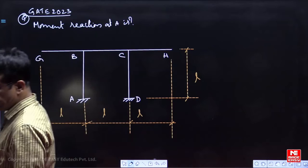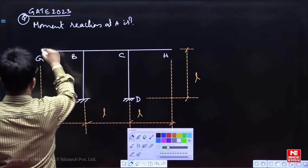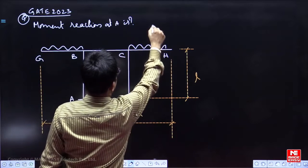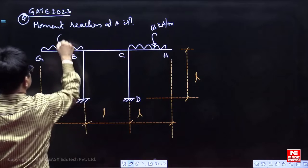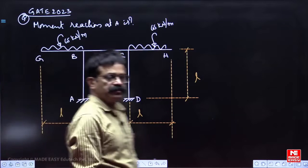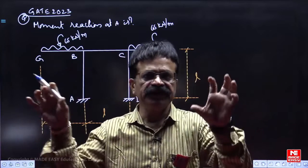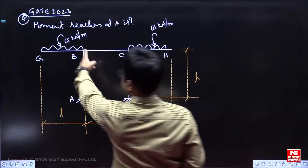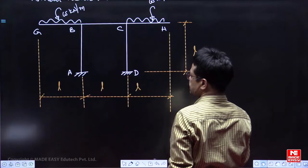It is subjected to UDL. In moment distribution method, we neglect the overhangs, the effect of the overhang on the frame we will see. When you cut this one and remove it, cut this and remove it, the structure now looks like this.